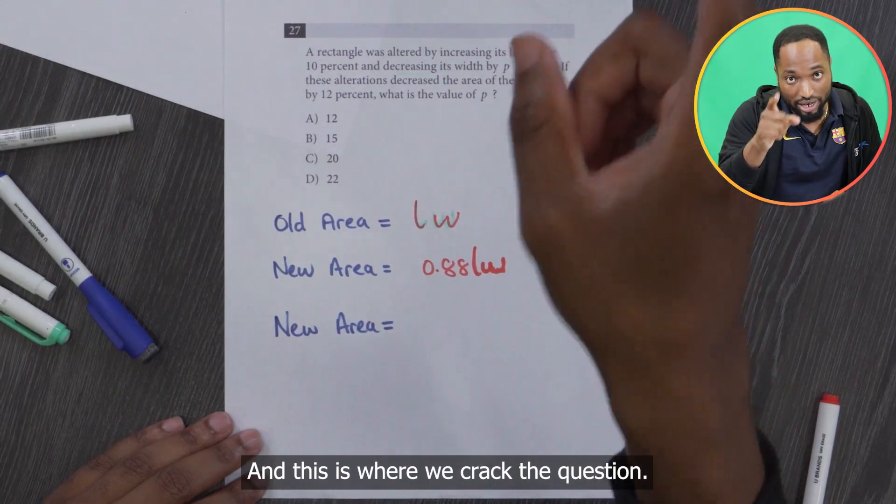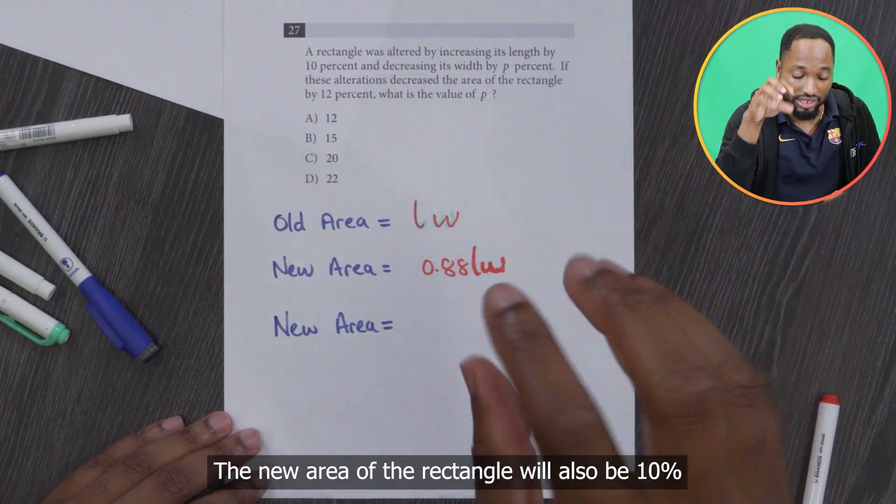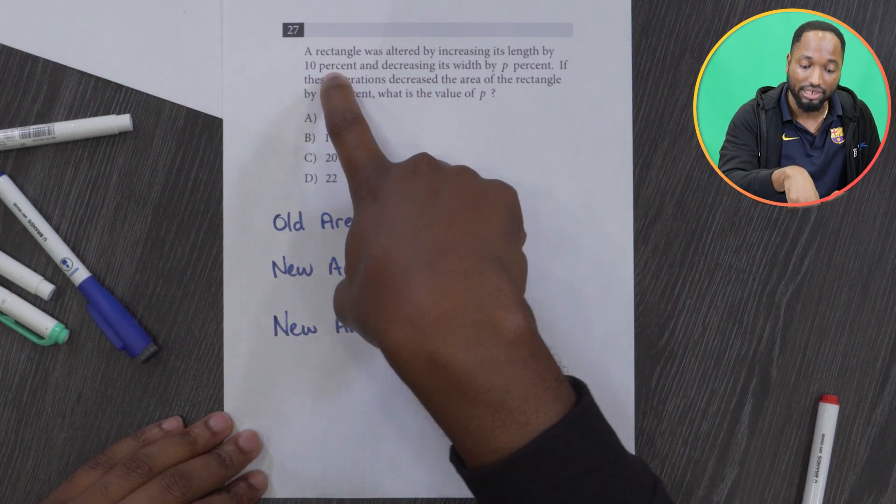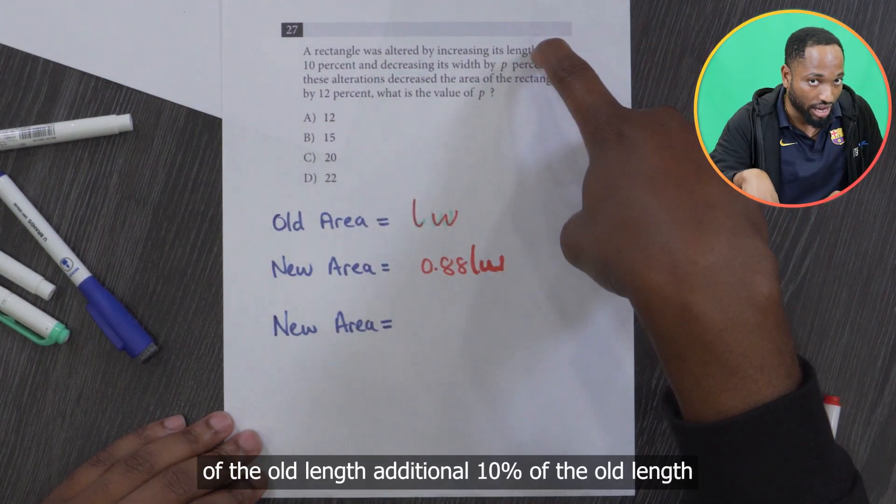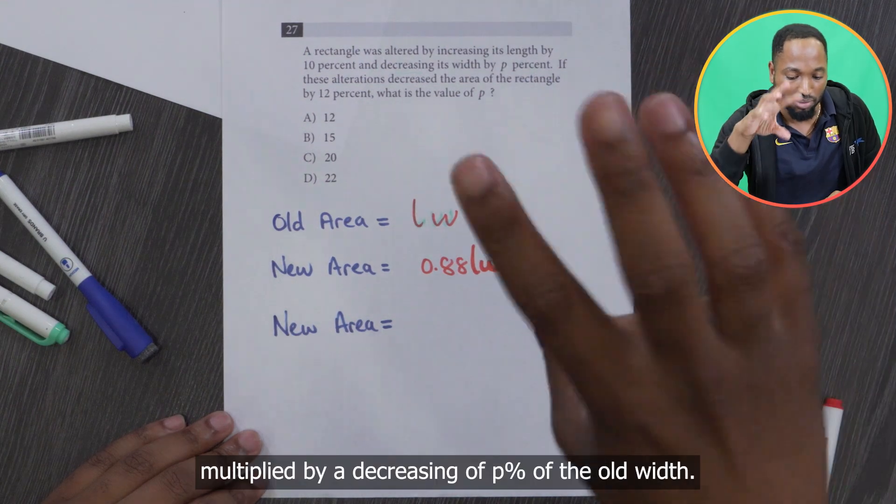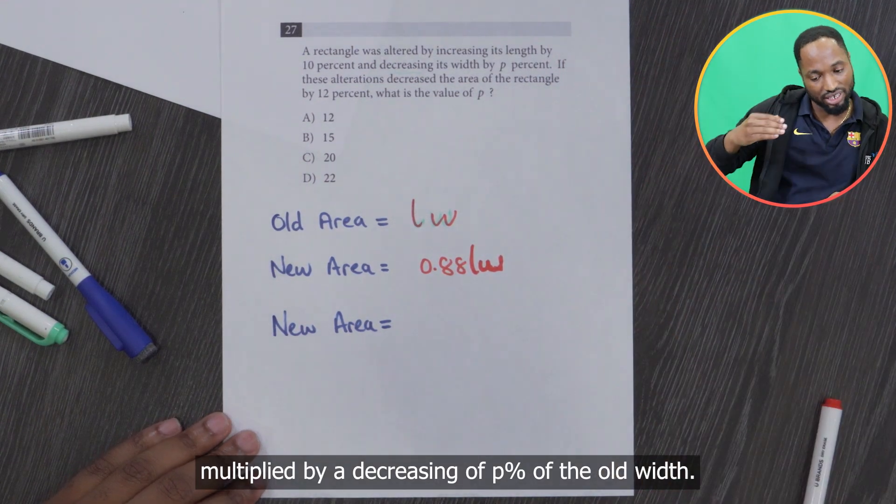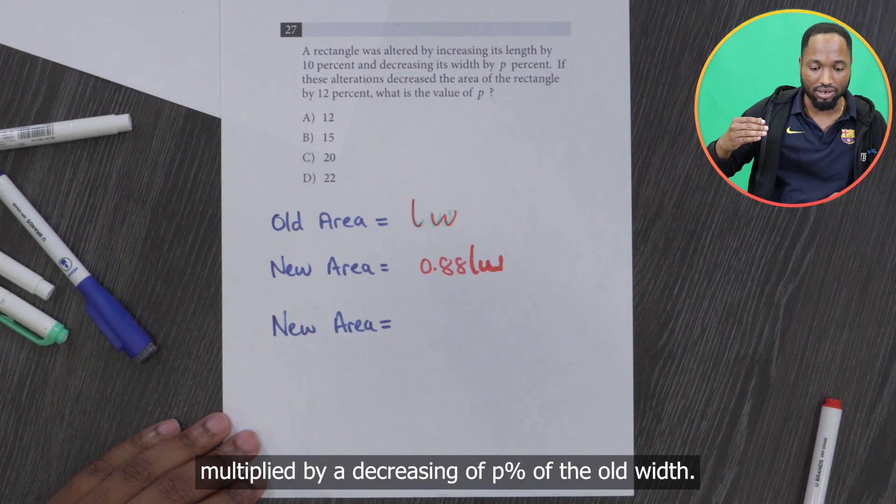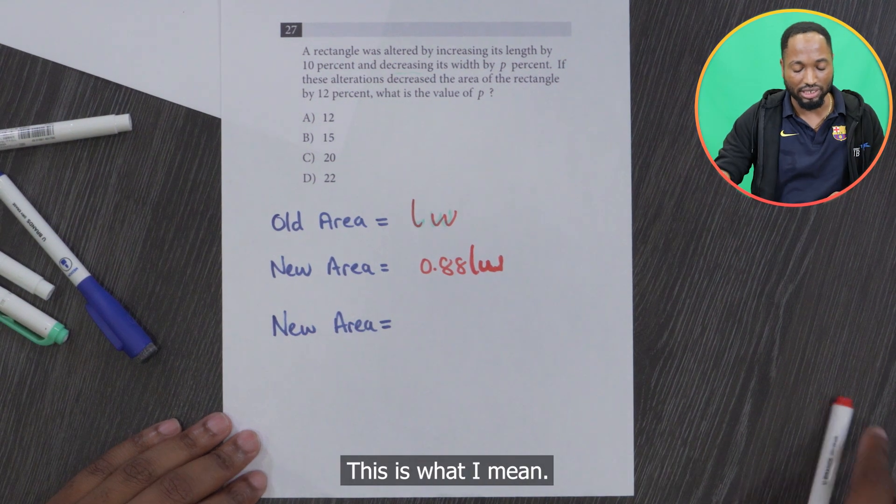And this is where we crack the question. The new area of the rectangle will also be 10% of the old length, additional 10% of the old length multiplied by a decreasing of P% of the old width. This is what I mean.